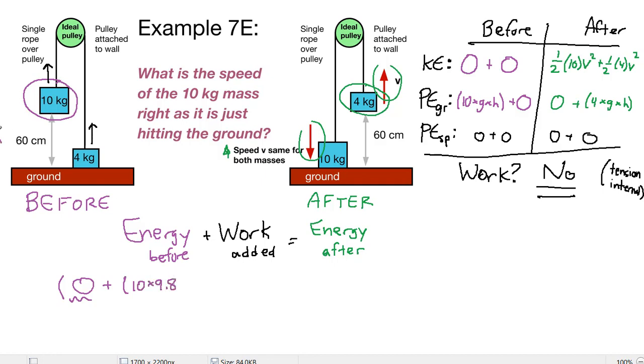Plus 10 times G times H because it's the 10 kilogram block that is higher. 10 times 9.8. And if we look, the height here, 60 centimeters, should be 0.6 meters to be able to play nicely with the rest of our units, 0.6 meters. Our work added term, we look and we said no, there is no external force that is adding or taking energy out of the system. And then the energy after, we have 1 half times 10 times V squared plus 1 half times 4 times V squared plus 4 times 9.8. The height is still 0.6 over here that it's higher by. 0.6. And then several other zero terms.